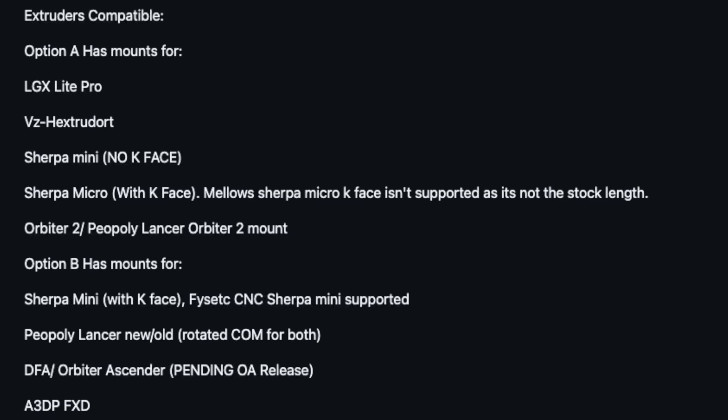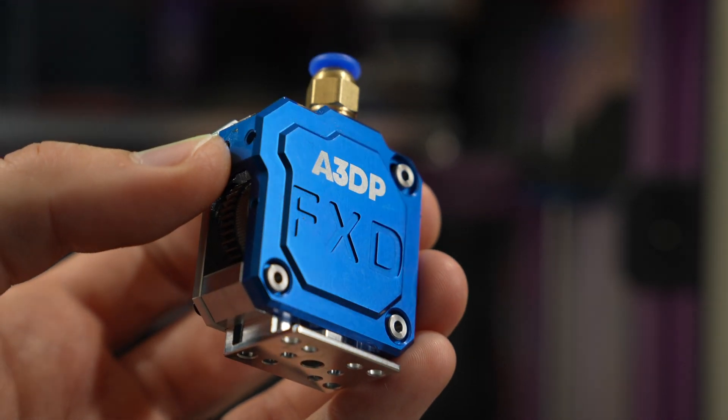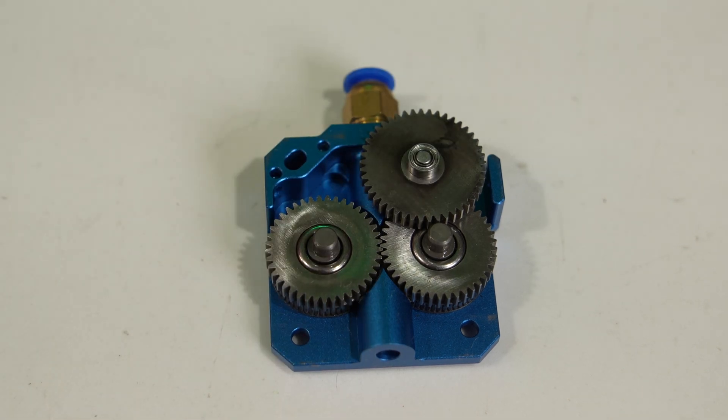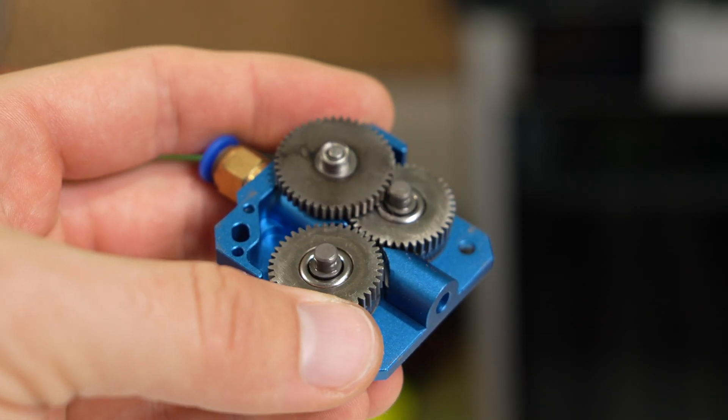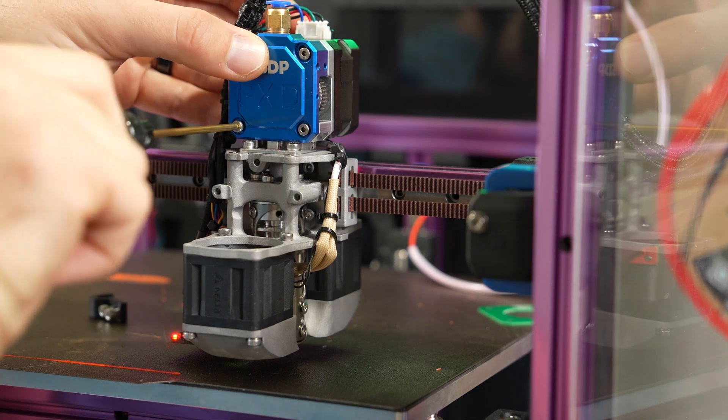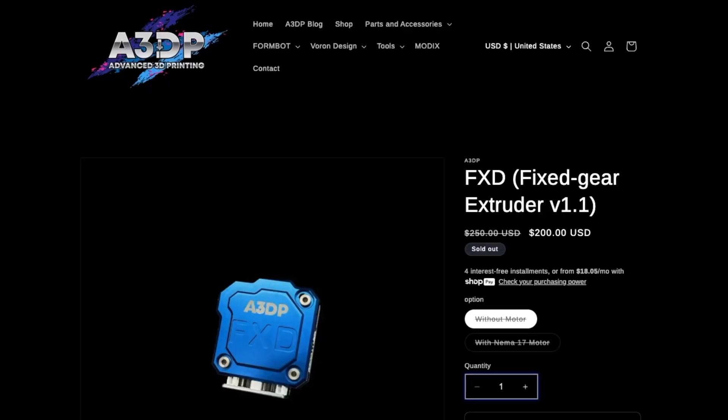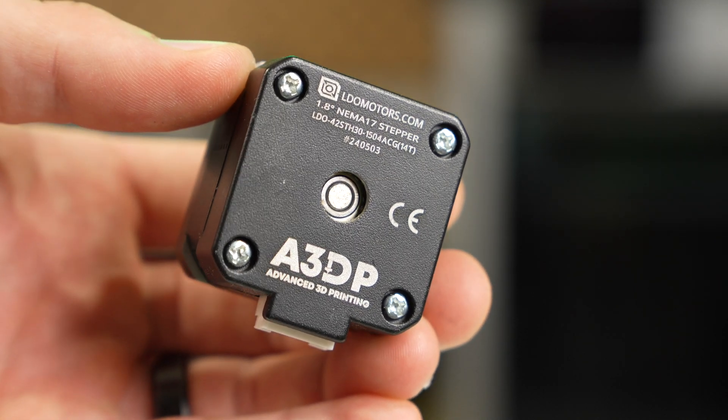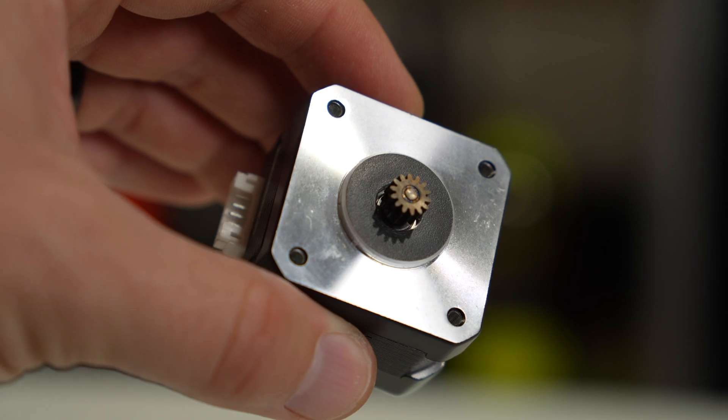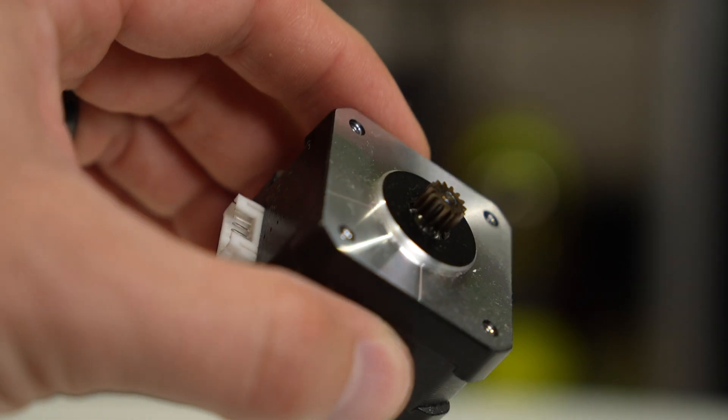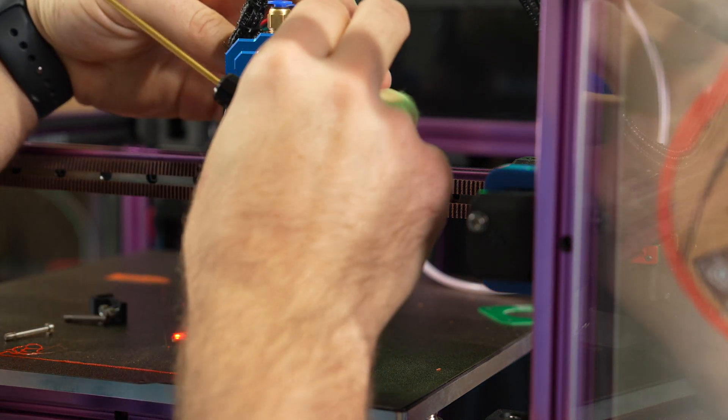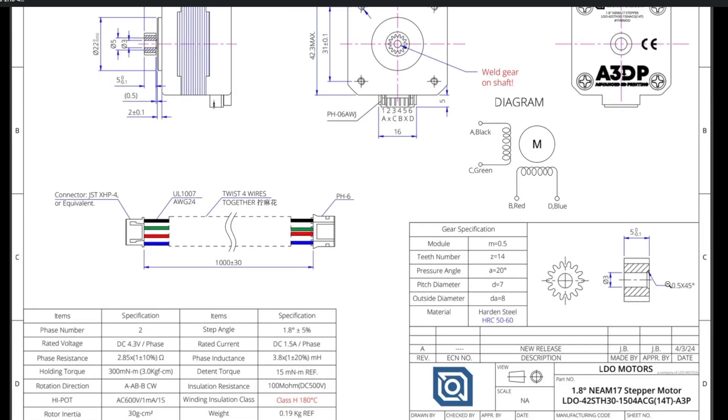The current version has two extruder plate options, giving you compatibility with a wide range of extruders. The extruder I'm using is the FXD, or fixed gear extruder, from Advanced 3D Printing. This extruder's body is made entirely of machined aluminum, and it uses beefy, monolithic steel gears. It's a high-performance extruder intended to work with anything from standard to highly abrasive materials. I paired this with their FXD-designed NEMA 17 stepper that is manufactured by LDO. This is a 28mm long motor that uses a hardened steel pinion, meant to be able to take plenty of abuse. I spoke quite a bit with A3DP, and they let me know that lots of testing has gone into coming up with this specific motor configuration.